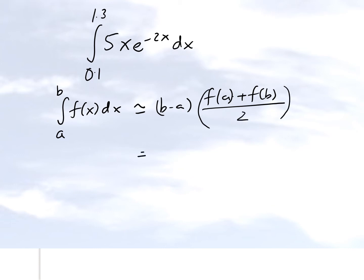In this case, we have the values of a and b, 1.3 and 0.1. Then, we are going to calculate the value of the function at 0.1 and at 1.3, and we take the average value of those two.